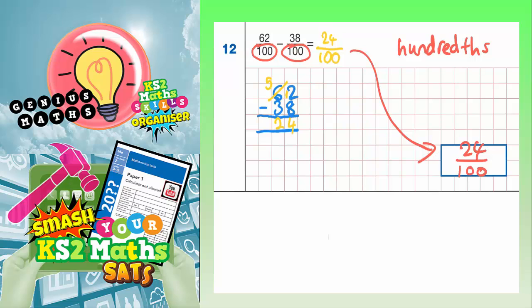Another way of describing it is, imagine the unit that we've said is hundredths at the bottom of the fraction, imagine that saying apples. So 62 apples take away 38 apples. Well, 62 take away 38 is 24, so that would be 24 apples. 62 oranges take away 38 oranges would be 24 oranges. 62 policemen take away 38 policemen would be 24 policemen. So 62 hundredths take away 38 hundredths is 24 hundredths.